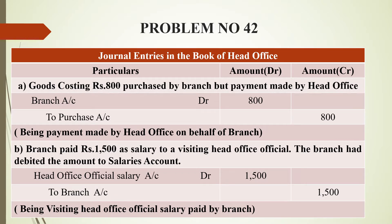When goods are purchased by the branch but payment is made by the head office, in the head office books, branch account is debited and purchase account is credited. Branch account is debited because rupees 800 is still with the branch, and purchase account is credited because 800 rupees has gone out in the form of purchase. Narration: payment made by head office on behalf of branch.